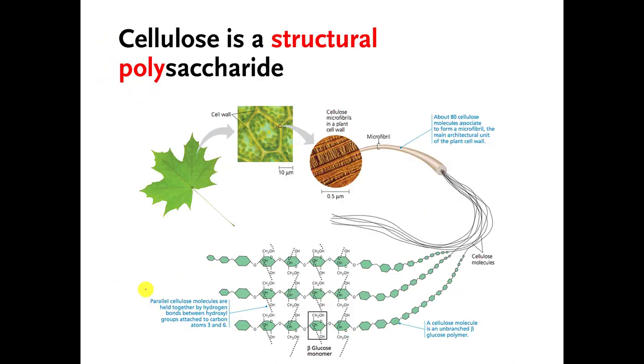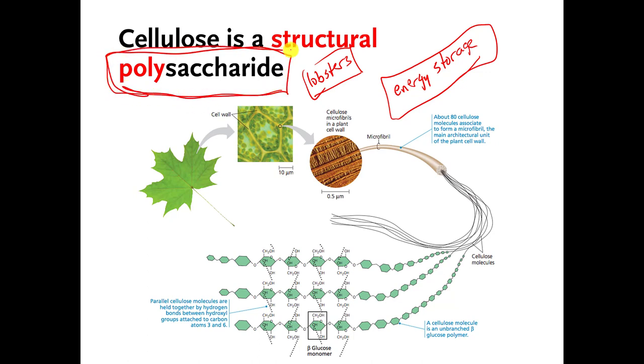And one other thing that I should point out, I said that polysaccharides are often used for energy storage. That's one of the uses. Sometimes polysaccharides can be used to give a hard structure to living things. So for example, you're probably familiar with lobsters and crabs. The shells of lobsters and crabs are made from a special type of polysaccharide that is very tough.